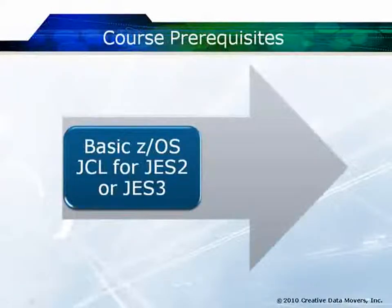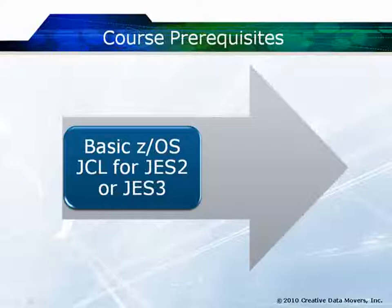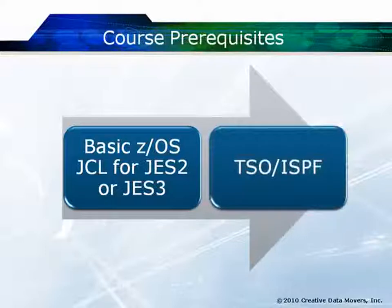The prerequisites to take this course: you should know enough JCL to recognize a DD statement and to understand what a DD statement is used for, and to write and code an execute statement and a job statement on your system. I will give you all the basic JCL you need, but I will not really be explaining it, so I'd like you at least to have recognition ability for the clauses that you find in a DD statement. You also need to know TSO/ISPF. You need to know how to edit. I will be showing you how to create new PDSs using option 3.2, but you will need to know the basics of how to do an edit and save of a member of a PDS.